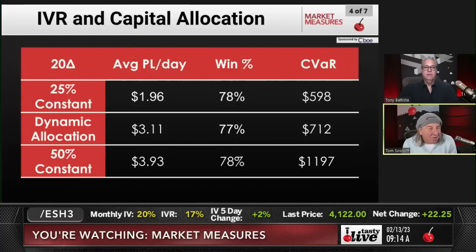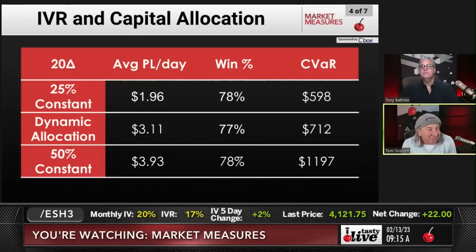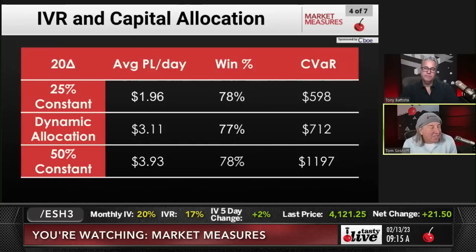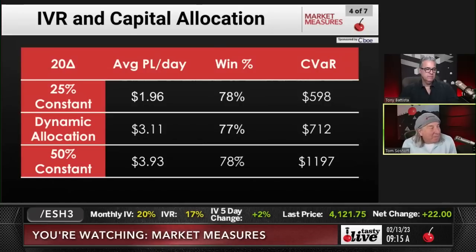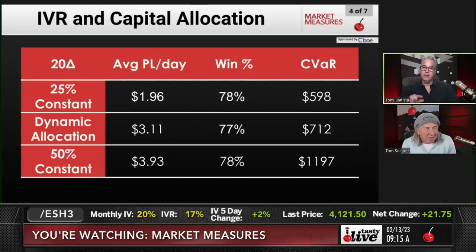The first one we looked at was a 30-delta strangle. Now we're going to look at it with a 20-delta strangle, which is more along the lines of what we do all the time. The results are about the same — the win rate and conditional value at risk are essentially the same. The C-VAR is what happens in the worst 5% of all cases. By the way, we are adding C-VAR to the TastyWorks platform — it's at the top of the queue and hopefully you'll see it in the next quarter.